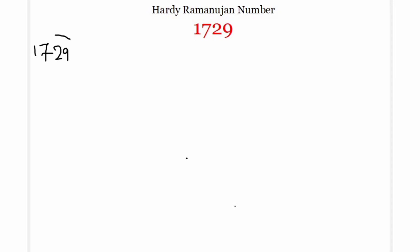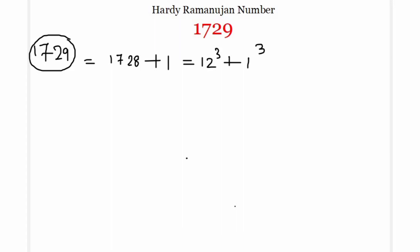We can represent 1729 in two distinct ways as sums of cubes. For example, we can write it as 1728 plus 1, which is equal to 12³ plus 1³. And also we can write it as 1000 plus 729, where 1000 equals 10³ and 729 equals 9³. So in a nutshell, 1729 is the smallest number that can be expressed as a sum of two cubes in two distinct ways.